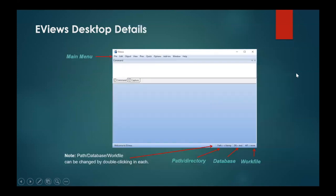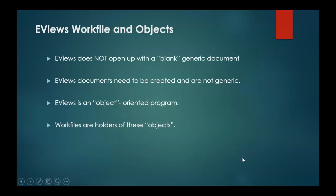In this slide, you are able to see the main menu which consists of files, edit, object, view, proc, quick, options, add-ins, window, helps, and other options. You can also see that there are some acronyms written here like wf, db, and path, which basically represents the path directory, database and work file in case of the eViews desktop.